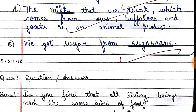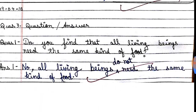The milk that we drink, which comes from cows, buffaloes and goats, is an animal product, because we get it from animals. Next, we get sugar from sugarcane and we make sugar from it.